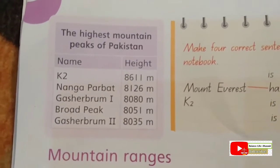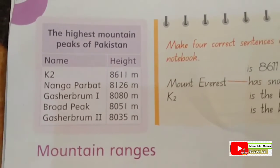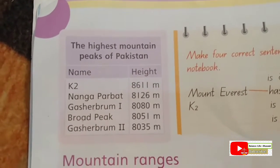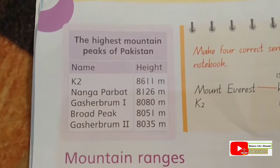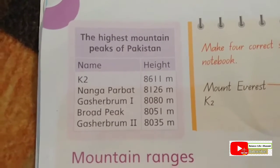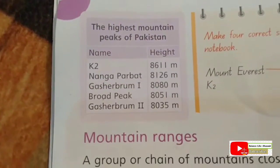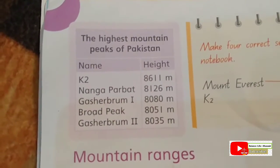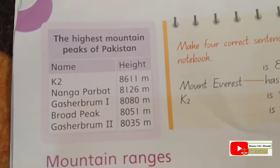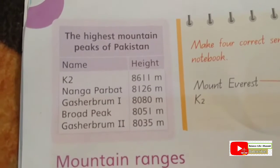The five highest mountain peaks in Pakistan are: K2 at 8,611 meters, Nanga Parbat at 8,126 meters, Gasherbrum I at 8,080 meters, Broad Peak at 8,051 meters, and Gasherbrum II at 8,035 meters.